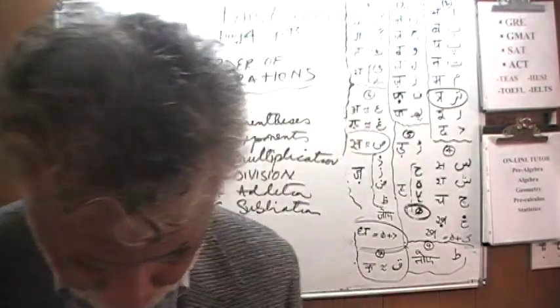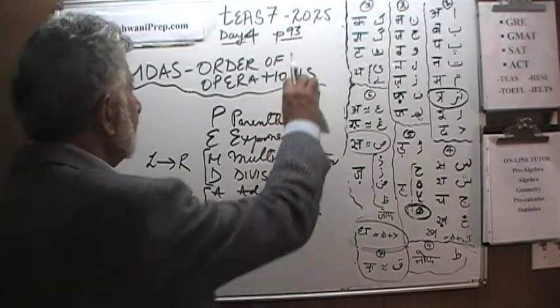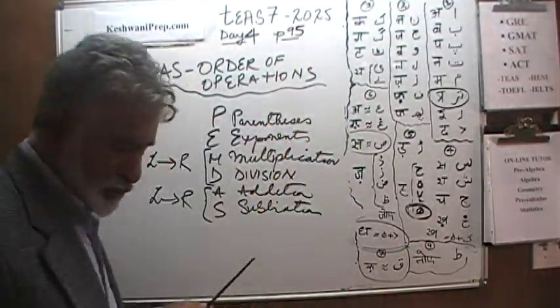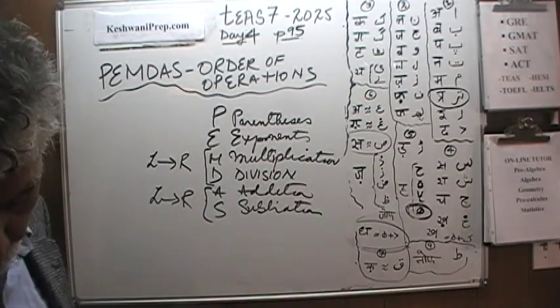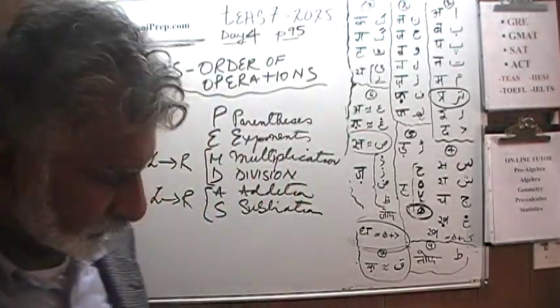Let's begin. We are on page number 95. On that page, you will find four examples. We will work through all four of these examples. And we will see what this means actually. Let's begin.